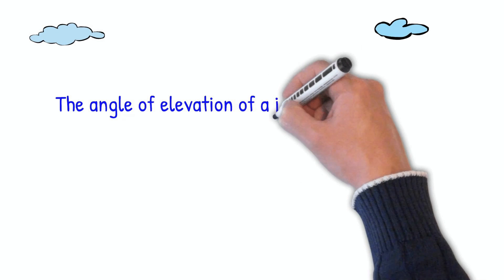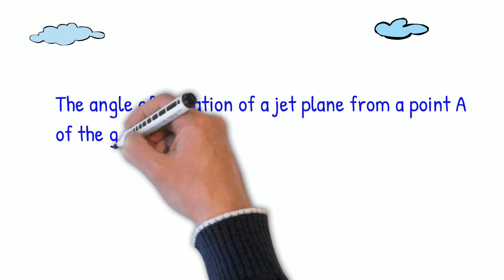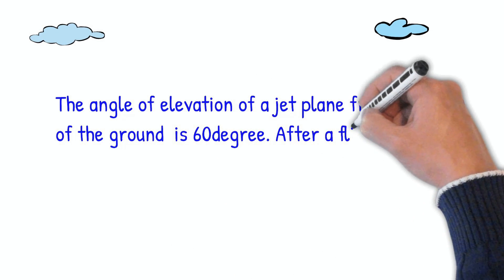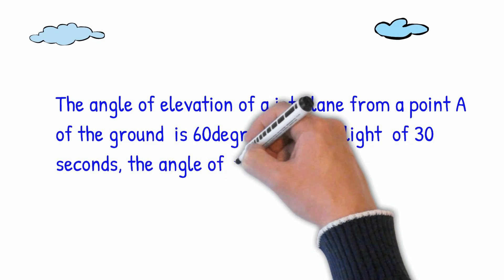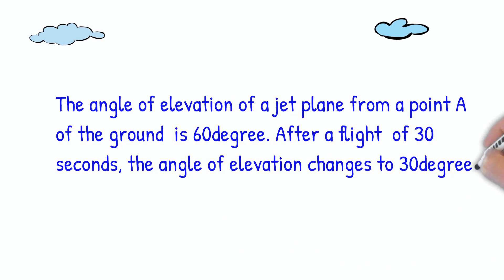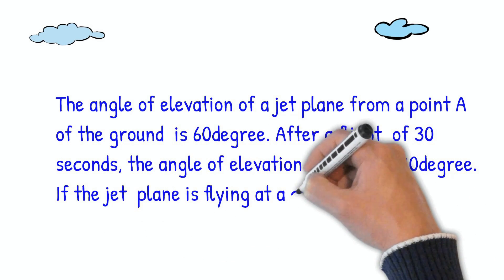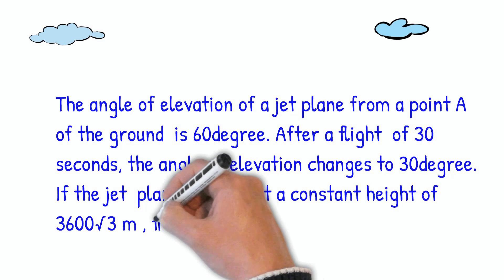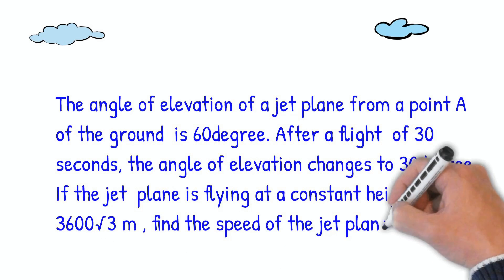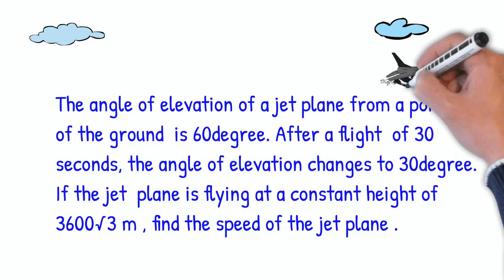Let us see the question. The angle of elevation of a jet plane from a point A of the ground is 60 degrees. After a flight of 30 seconds, the angle of elevation changes to 30 degrees. If the jet plane is flying at a constant height of 3600 root 3 meters, find the speed of the jet plane.